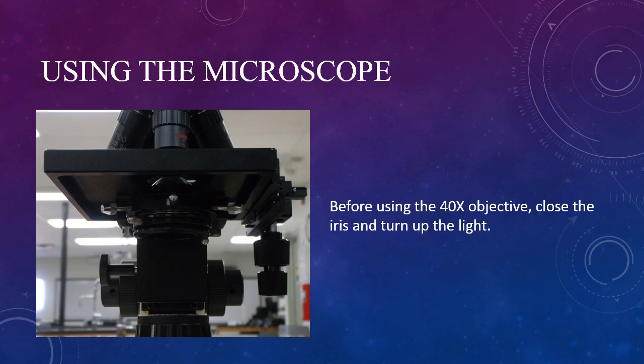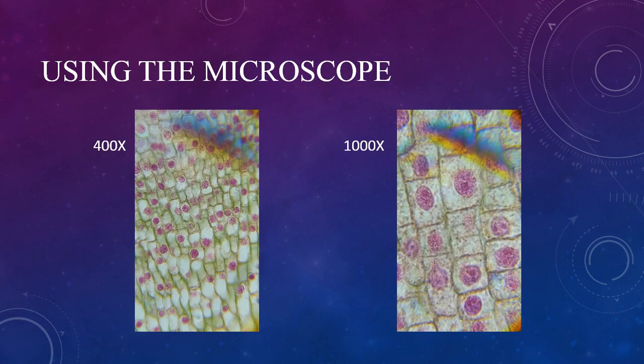If it doesn't slide easily, it's the wrong peg. Closing the iris and increasing the light will give us better contrast as we get to higher magnifications. With 400x total magnification, the structures inside the nucleus are visible, and we can identify different phases of mitosis.